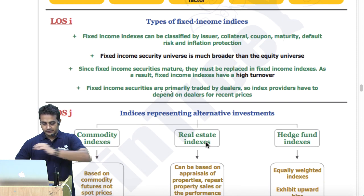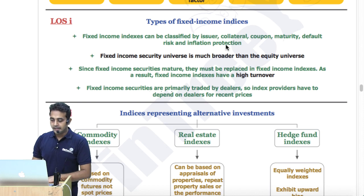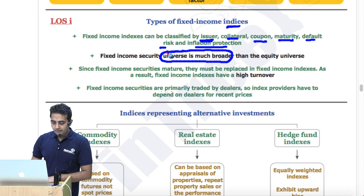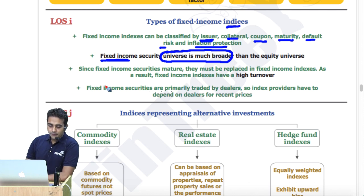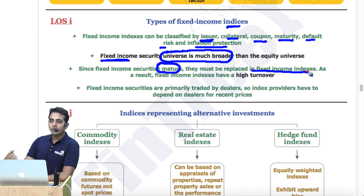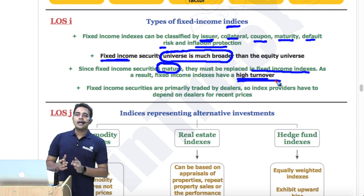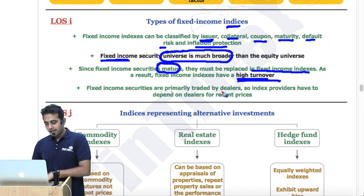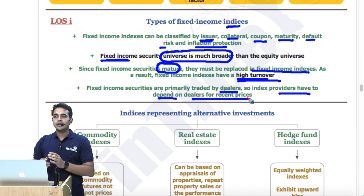Types of fixed income indices: the fixed income universe is much broader than the equity universe. It can be classified based on issuer, collateral, coupon, maturity, default, and inflation protection. Since fixed income securities mature, they must be replaced with newer ones, resulting in high turnover — you constantly remove matured ones and add new ones. Fixed income securities are primarily traded by dealers, so index providers must depend on dealers for recent prices.